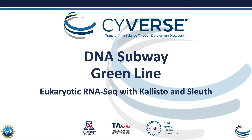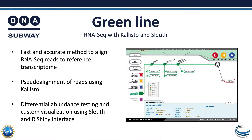DNA Subway Greenline provides a classroom-friendly interface to eukaryotic RNA-seq using Kallisto and Sleuth. In this short video, we'll provide just the highlights of getting started with the Greenline. Using the Greenline, it's possible to quickly and accurately align RNA-seq reads to a reference transcriptome.